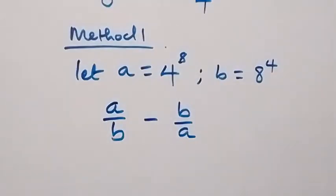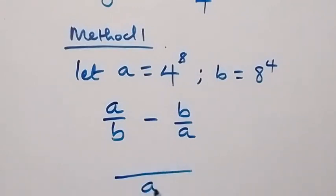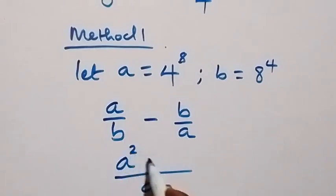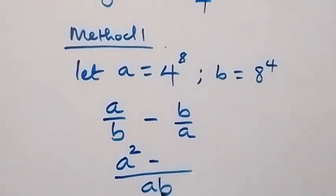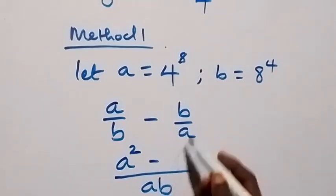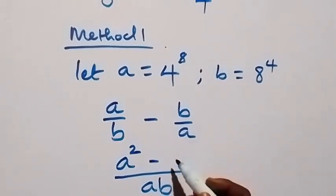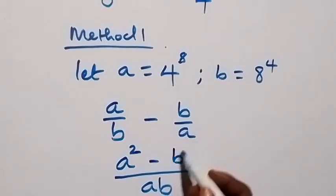When we bring this together, the common denominator is ab. Then b goes into ab giving a, and a times a gives us a squared. Then minus: a goes into ab giving b, and b times b gives us b squared.